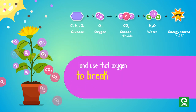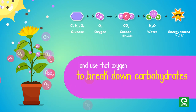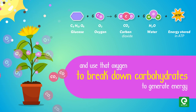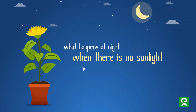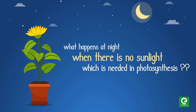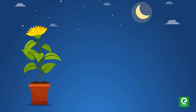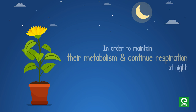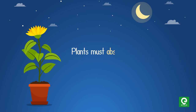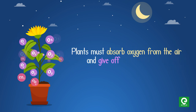But what happens at night when there is no sunlight, which is needed in photosynthesis? Interestingly, in order to maintain their metabolism and continue respiration at night, plants must absorb oxygen from the air.